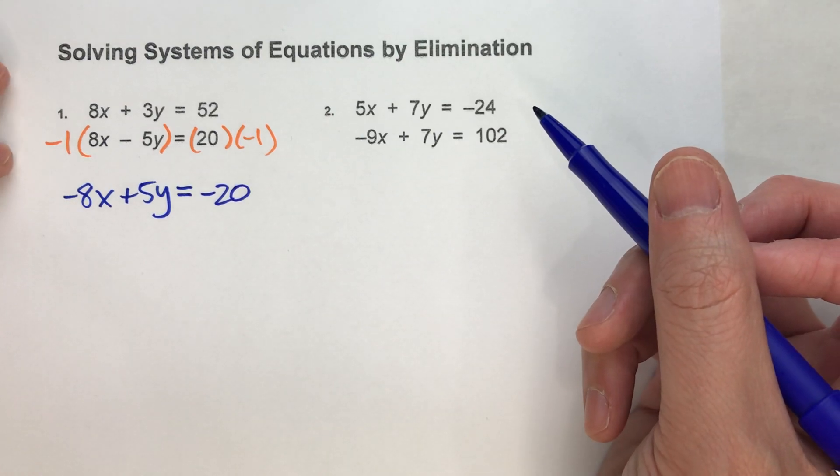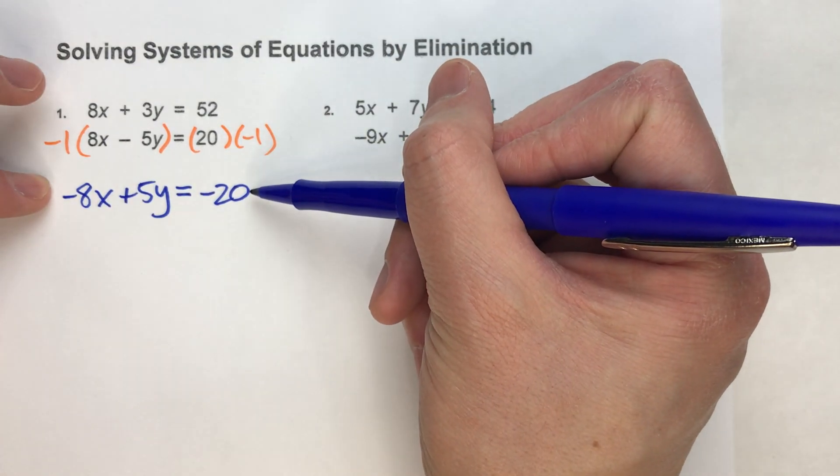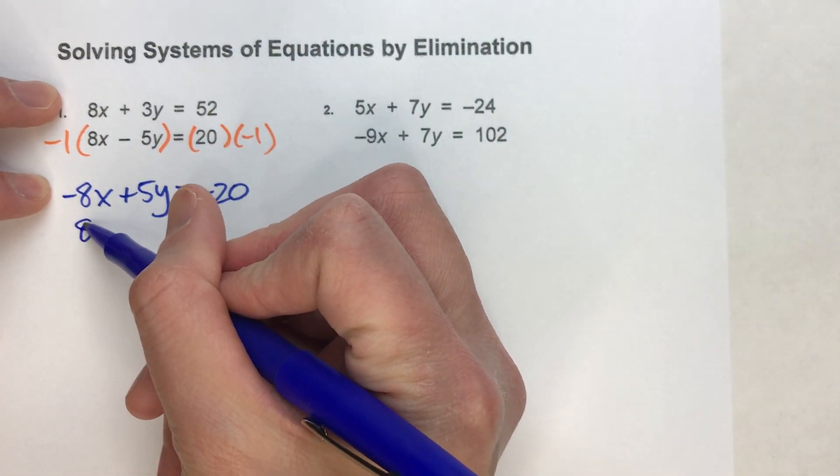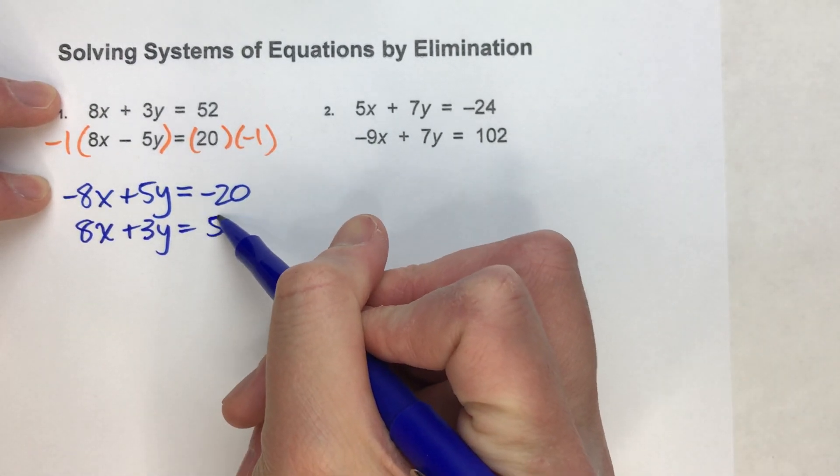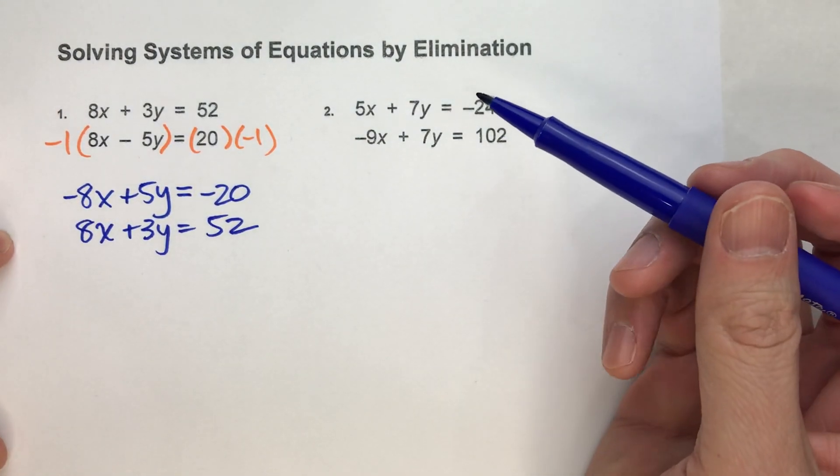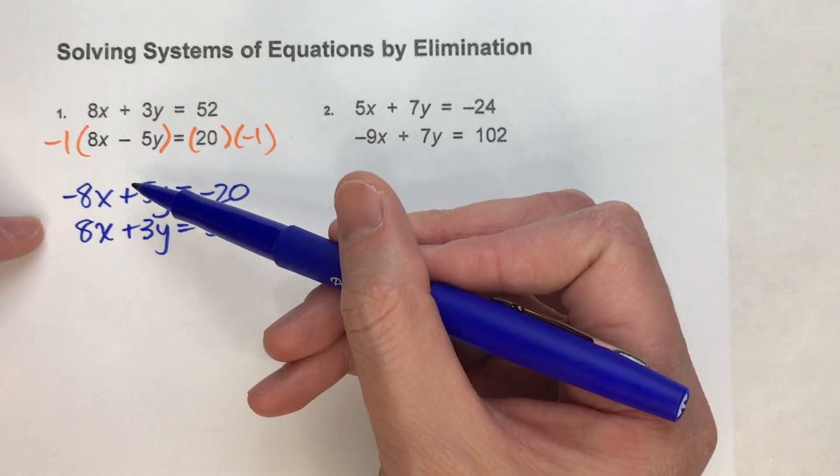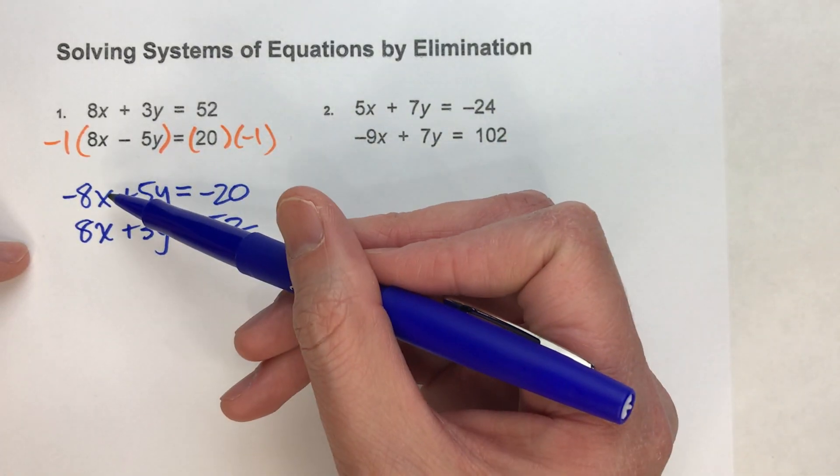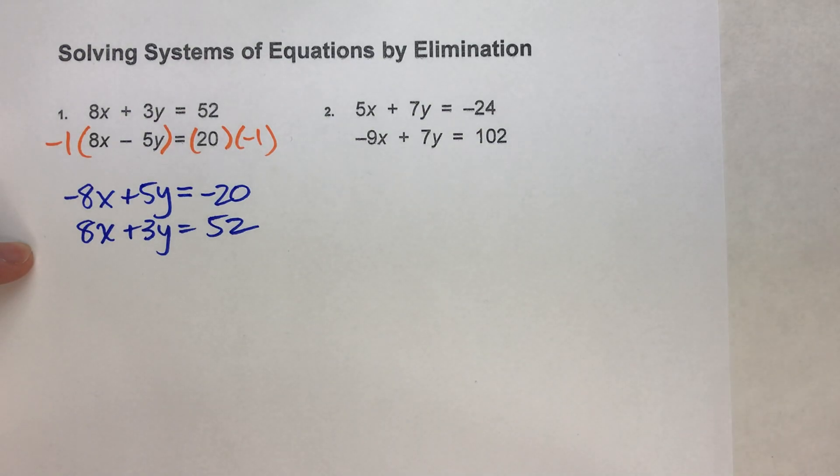Now, if you notice, if I use this equation and the first one, which was 8x + 3y = 52, now we have a situation like last time where I can actually add the two equations together and eliminate my x's.